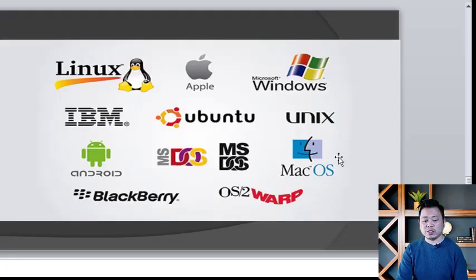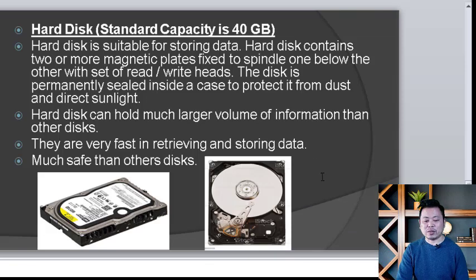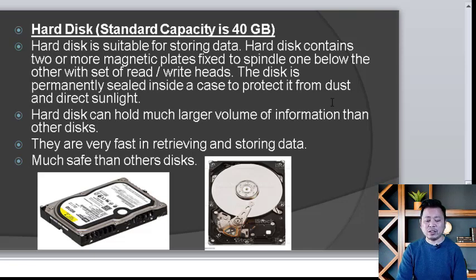The operating system is basically used by Linux, Apple, Windows, IBM, Ubuntu, and Unix — these kinds of operating systems are installed in devices. The hard disk is a secondary storage device. Hard disk capacities include 40 GB, 180 GB, 320 GB, 500 GB, and 1 TB.